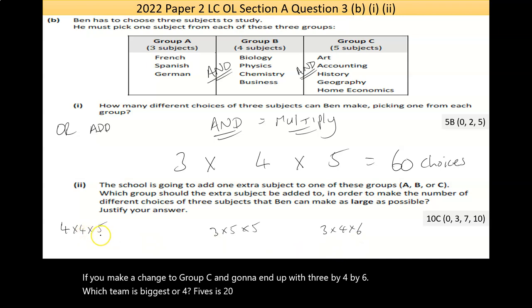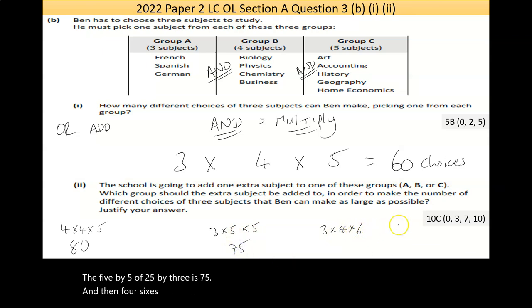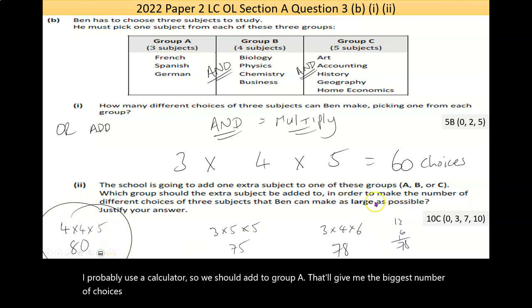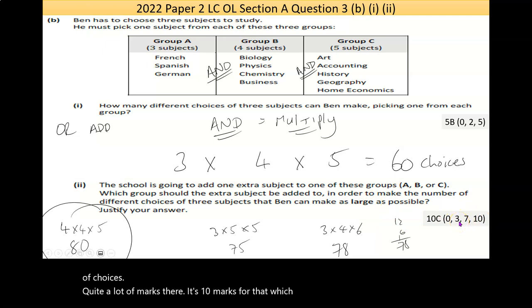Well, four fives is 20, 20 times four is 80 choices. Now five by five is 25, by three is 75. And then four sixes, three fours is 12, by six, two sixes is 18, 78. I'd probably use a calculator. So we should add to group A. That'll give me the biggest number of choices. Actually, quite a lot of marks there. Just notice 10 marks for that, which is quite a chunk of marks.